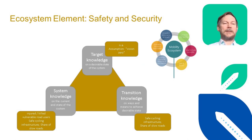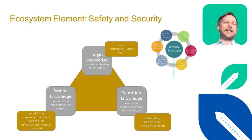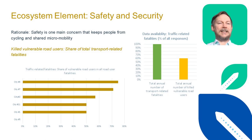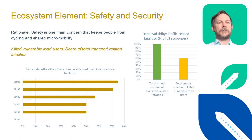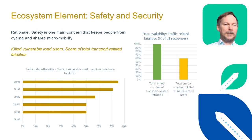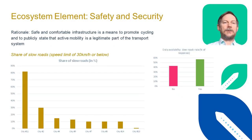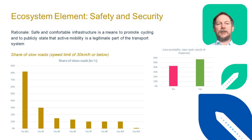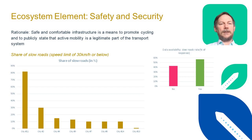Under the safety and security ecosystem element, we looked at conditions for vulnerable road users — the share of fatalities and severely injured cyclists and pedestrians, as well as infrastructure and speed limits. The database was weaker than expected, with only 60% of cities providing data on killed vulnerable road users. In all cases except one, at least 50% of transport-related fatalities came from this group, with ranges up to 75%. On the policy side, we asked cities for the share of urban roads with a speed limit of 30 km/h or lower. One city had over 80% of slow roads, while the majority had only around 10%.